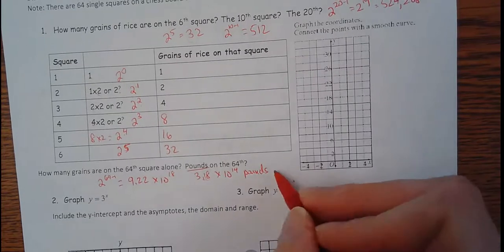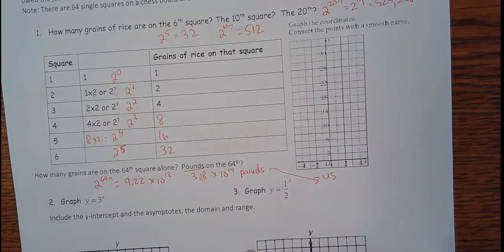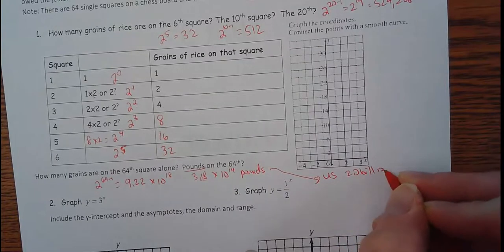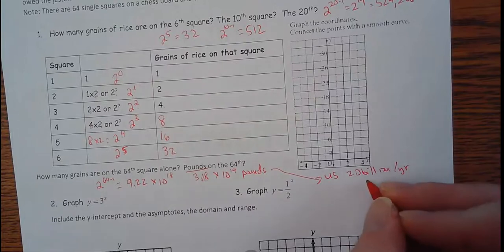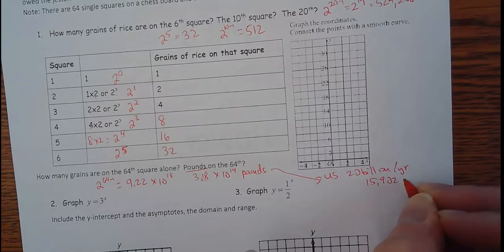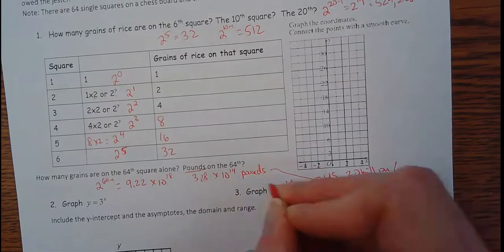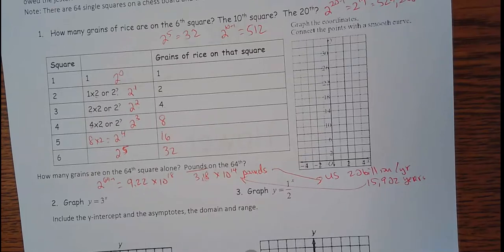Put some context behind this. The US produces about 20 billion pounds of rice per year. They would take about 15,000 to almost 16,000 years to produce this much, this many pounds. So it'd take about 16,000 years to produce enough rice to cover the last square. That's just the 64th square.